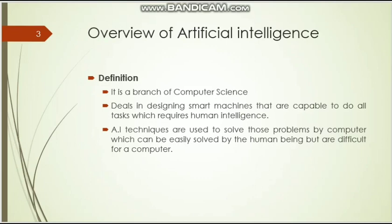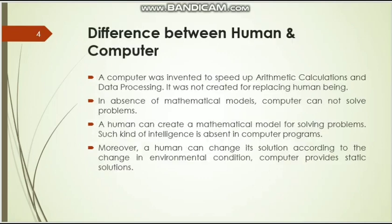The artificial intelligence techniques are used to solve those problems by the computer which can be solved by human beings, but the computer can help to solve them in a minimum amount of time. The difference is that a human can solve any problem in any situation, but a machine cannot. For solving a problem, the machine should have an algorithm given by the human being. If that method is not given to the machine, then the machine is incapable of solving that particular problem.